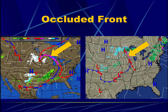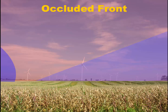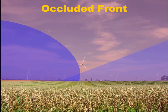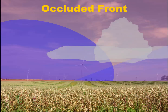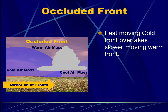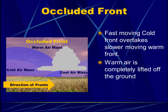Finally, we have the occluded front — shown here in pink on several weather maps. On the right hand side of the diagram you see something that looks like a warm front, and on the left hand side the beginning of a cold front — that is indeed our setup for the occluded front. The occluded front happens when a fast-moving cold front overtakes the slower-moving warm front. Each front is a boundary between two air masses, so in this case we're looking at the interactions of three air masses. The warm air is completely lifted off the ground as the cold air mass overtakes the cool air mass, and again this can be associated with a lot of cloud formation.